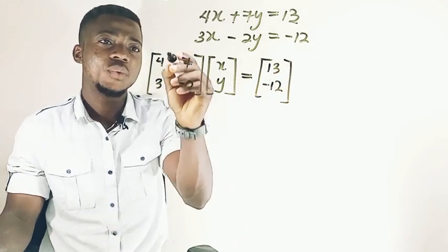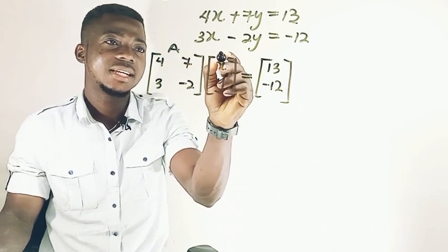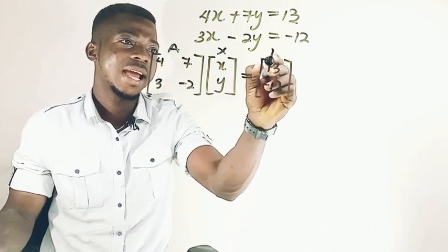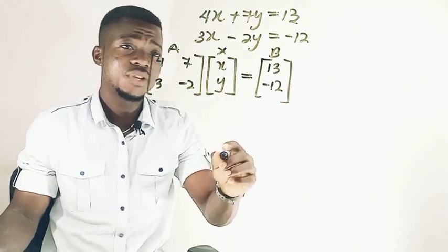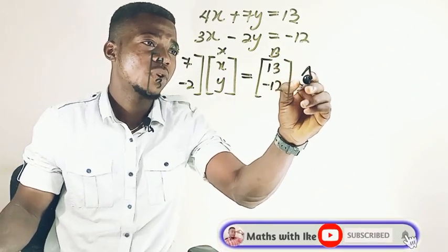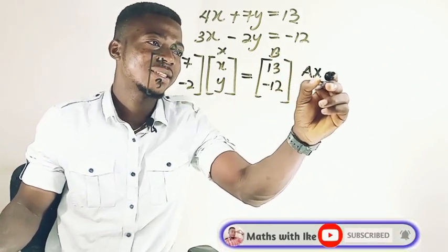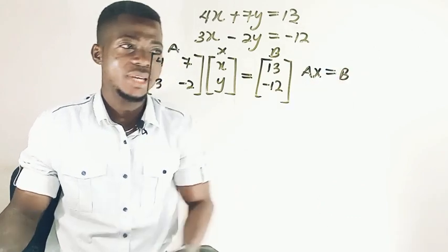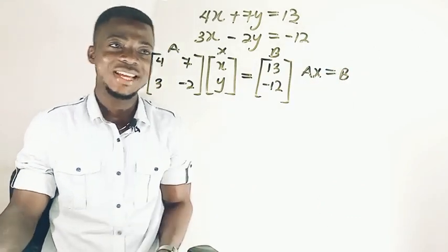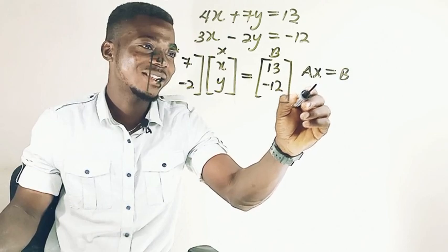So now, we can say that this is A, this is X, and this is B. So if I'm going to use an equation here, it's going to be AX equals to B. Now all we're looking for is the X, right? So we can make the X a subject.